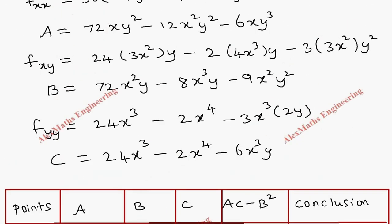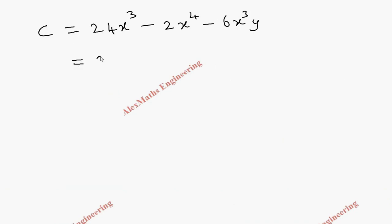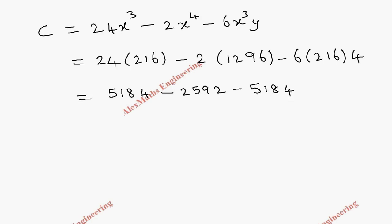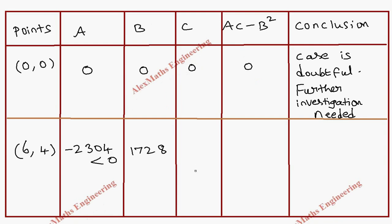Now we substitute into c = 24x³ - 2x⁴ - 6x³y at (6, 4): 24 · 216 - 2 · 1296 - 6 · 216 · 4. This gives 5184 - 2592 - 5184. The first and last terms cancel, leaving c = -2592.